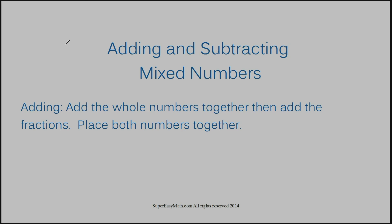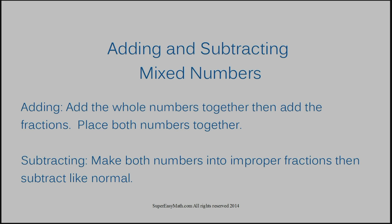When adding mixed numbers, you want to add your whole numbers together, then add your fractions. After you're done, you're going to place both numbers together, meaning you're going to add your whole numbers back to your fraction. When subtracting mixed numbers, you want to make both numbers into improper fractions, then subtract like normal.